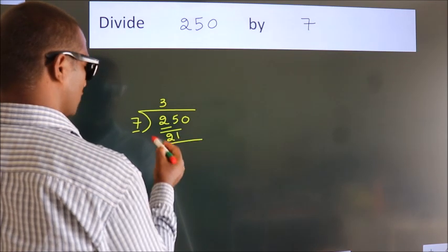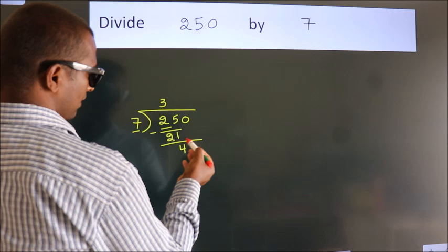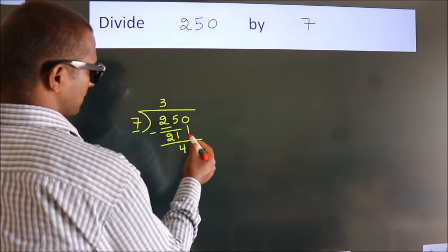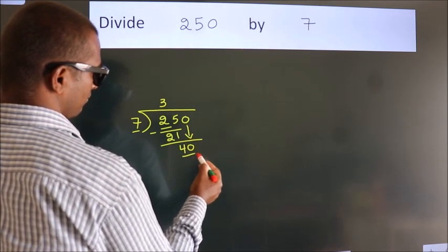Now we should subtract. We get 4. After this, bring down the beside number. So 0 down. So 40.